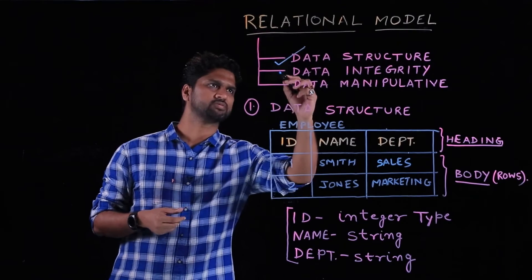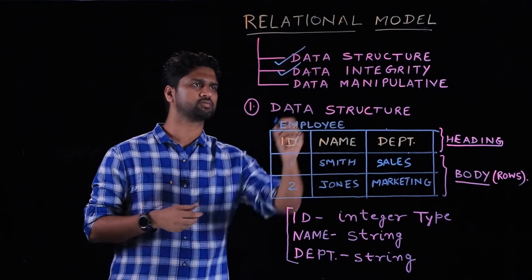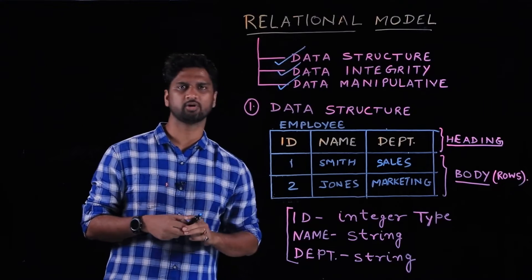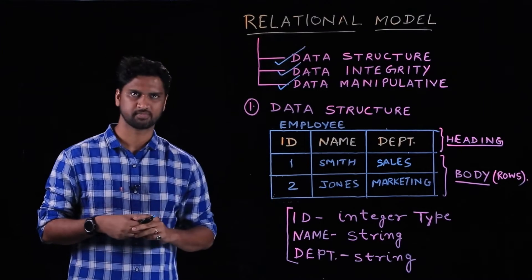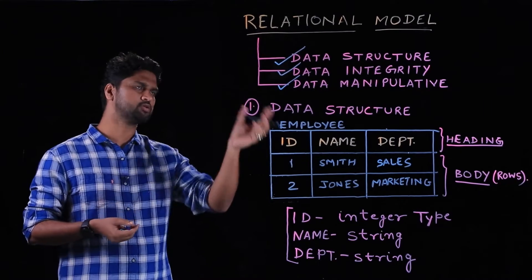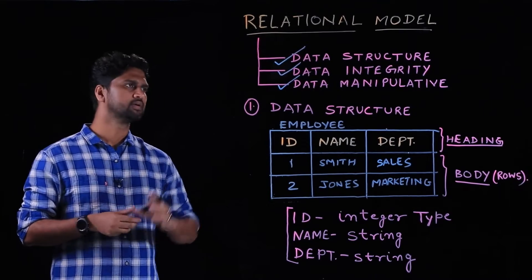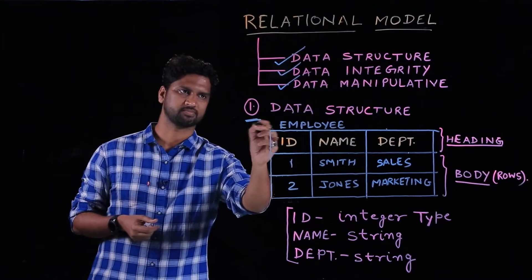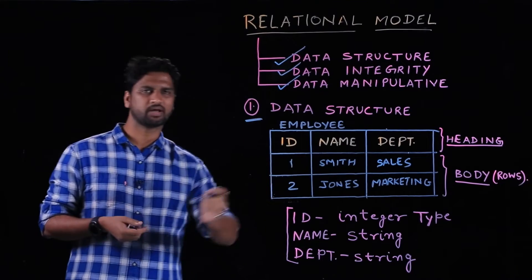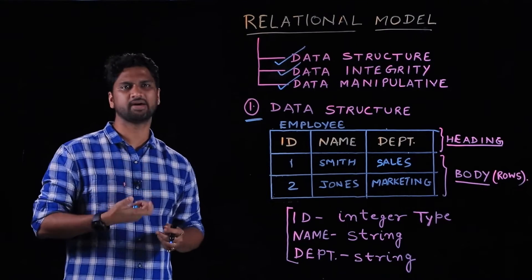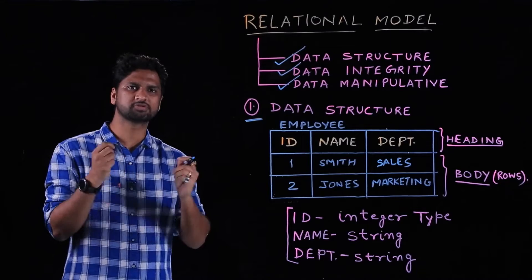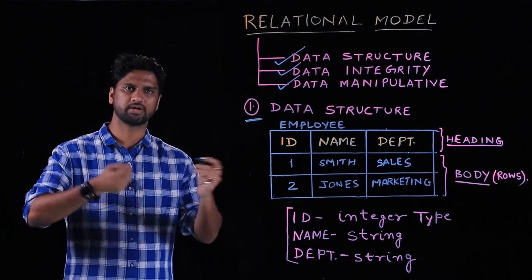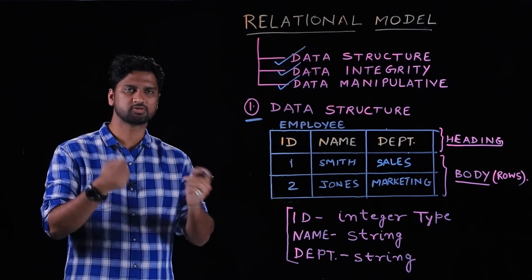The second talks about data integrity, and the third talks about how you manipulate the data — also called data manipulative. We will take each of these models one after another. The first one is data structure, which, as the name suggests, signifies how you store data in your database.